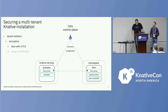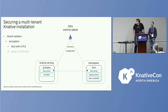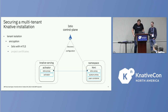Starting with encryption: we decided to use mTLS encryption provided by our service mesh, Istio, for all connections — for example from the service to the activator and from the activator to the individual service — so that the traffic is secured inside the cluster and separated from each other.